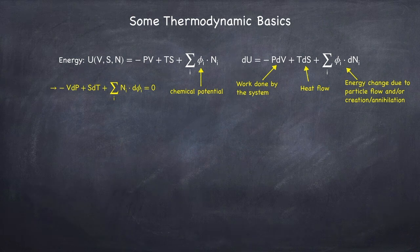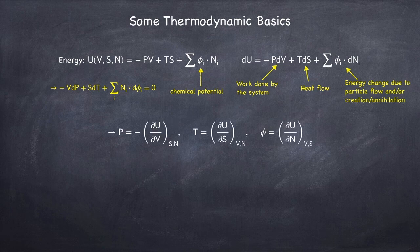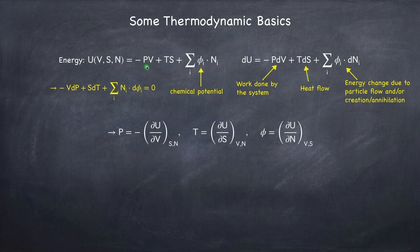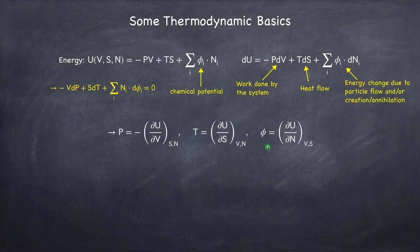We can now read off from our energy equation the following quantities. The pressure will be the negative partial derivative of the energy with respect to volume while holding entropy and particle number constant. In this definition of energy, the natural variables are volume, entropy, and number of particles. We can do the same thing for temperature — taking the partial derivative with respect to entropy while holding volume and particle number constant — and we can get the chemical potential by taking the partial derivative with respect to particle number, again for a given species.